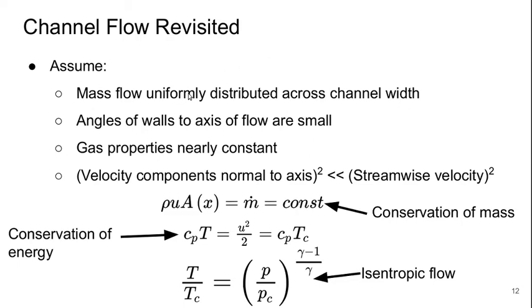Under these assumptions, conservation of mass is quite simple. It says that the density times the velocity times the area at a given location is the mass flow, and of course that's a constant. From the conservation of energy, we can get that, using the same expression we had before here, u is the velocity at a general location, and we can get this relationship.